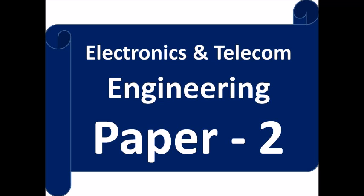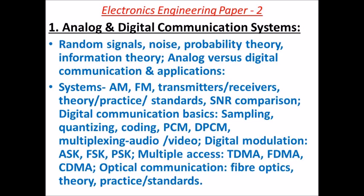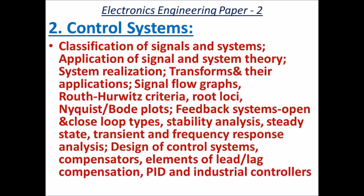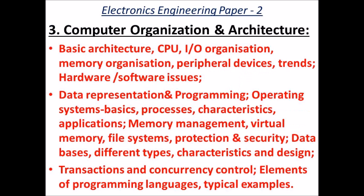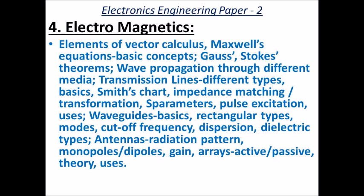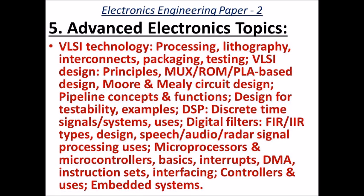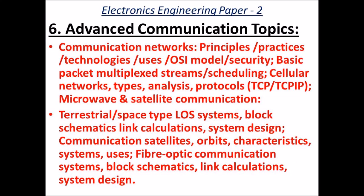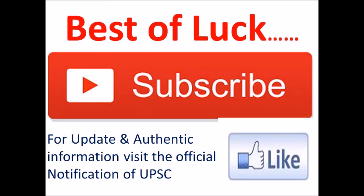Paper 2 is also a scoring paper for electronics and telecommunication engineering students. First topic is analog and digital communication systems with three subtopics. Second is control systems, covering classification of signals and systems. Third is computer organization and architecture with three subtopics. Fourth is electromagnetics. Fifth is advanced electronic topics like VLSI technology, MUX, ROM, and PLA. Sixth is advanced communication topics.